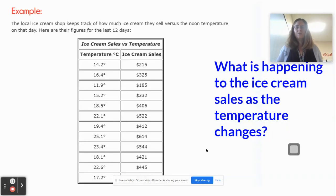Hello, I'm going to talk to you today about scatter plots and line of best fit. So here I have a table and it says the local ice cream shop keeps track of how much ice cream they sell versus the noon temperature on that day. Here are the figures for the last 12 days. And you can see that the temperatures in Celsius and the ice cream sales are listed there.